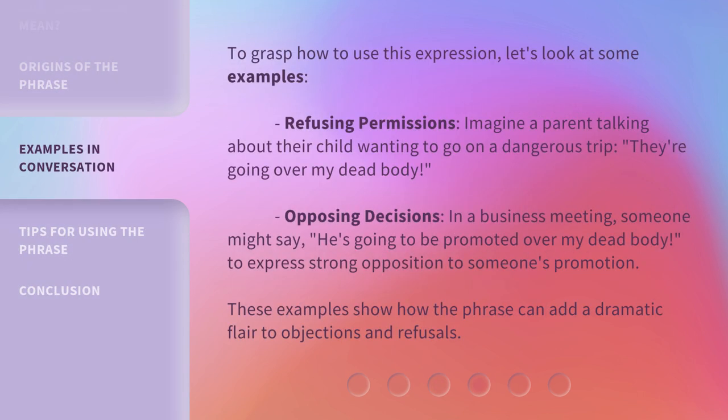To grasp how to use this expression, let's look at some examples. Refusing permissions: imagine a parent talking about their child wanting to go on a dangerous trip — 'They're going over my dead body.'